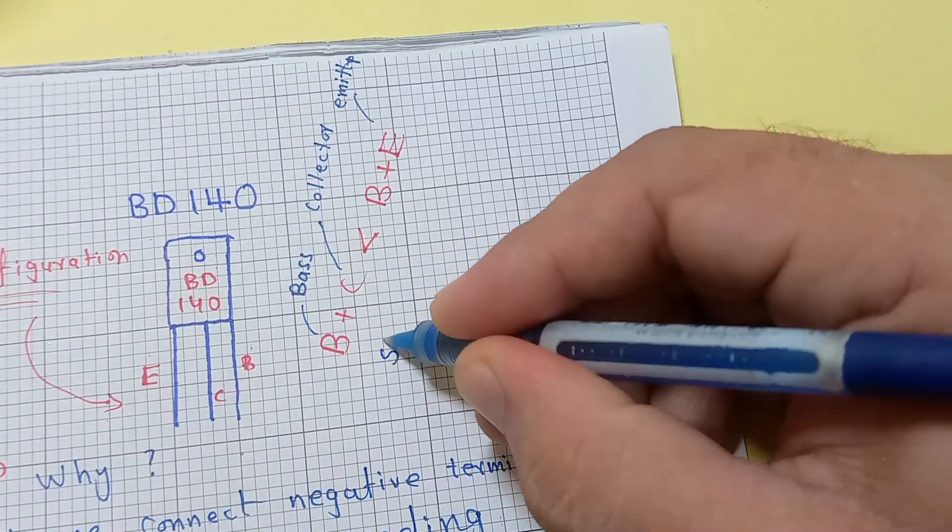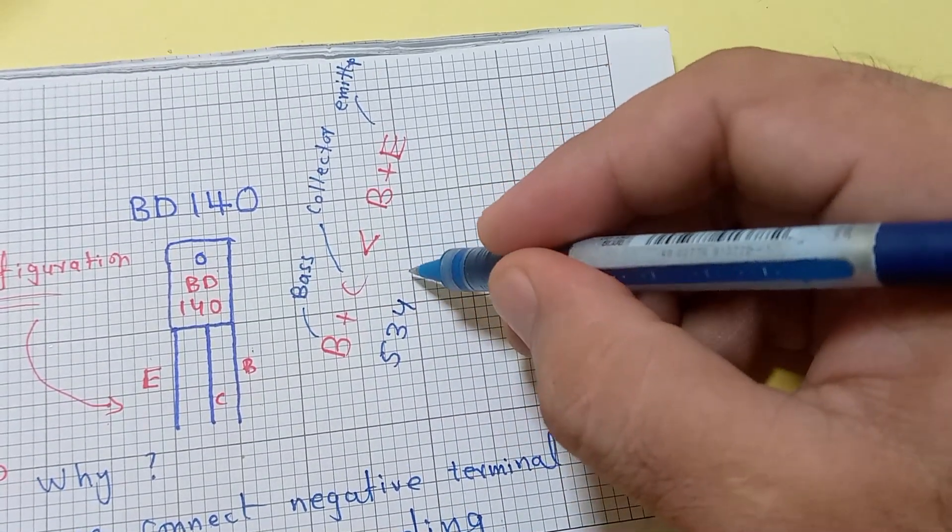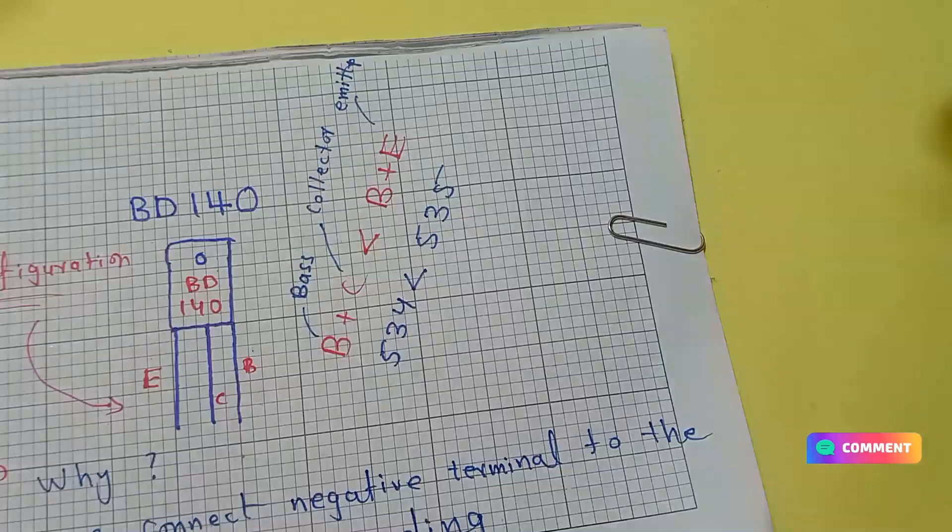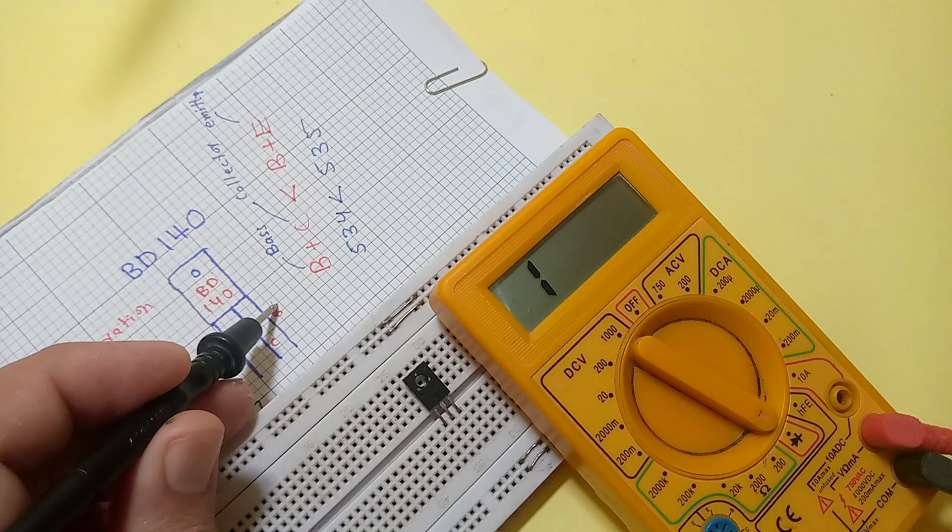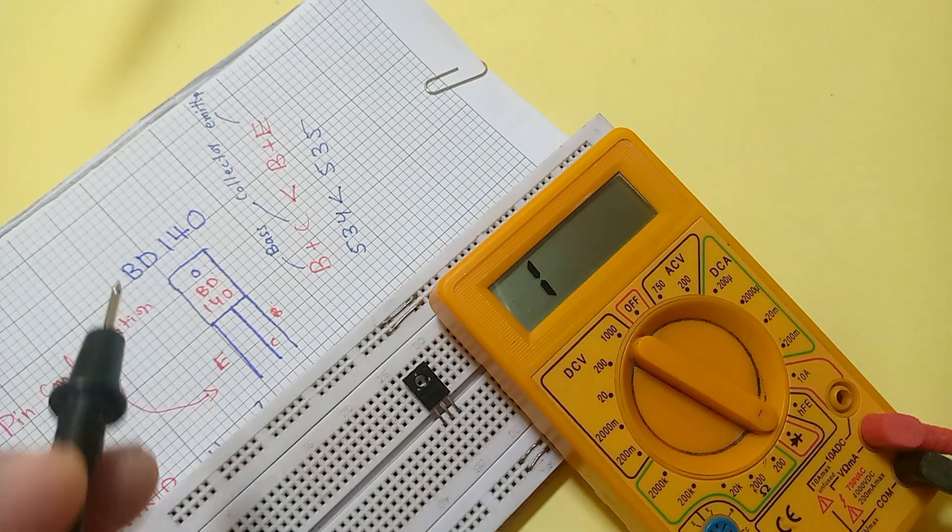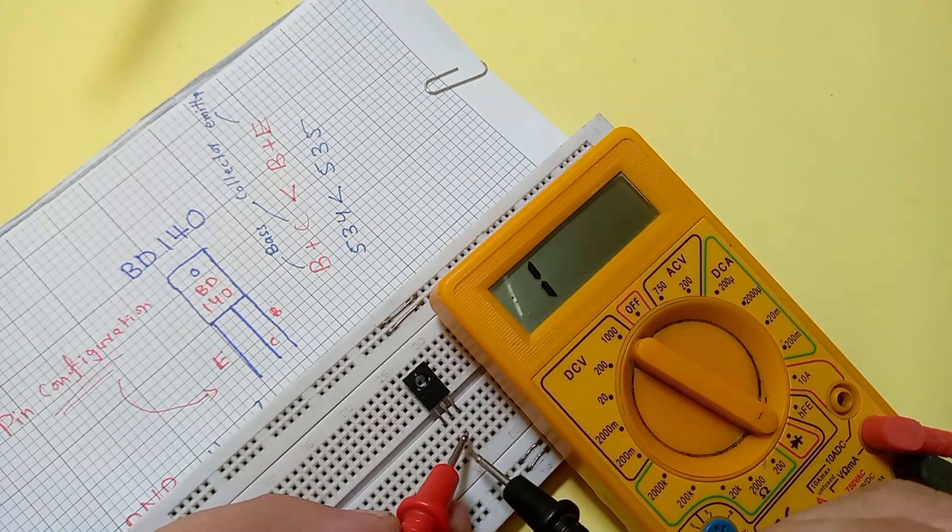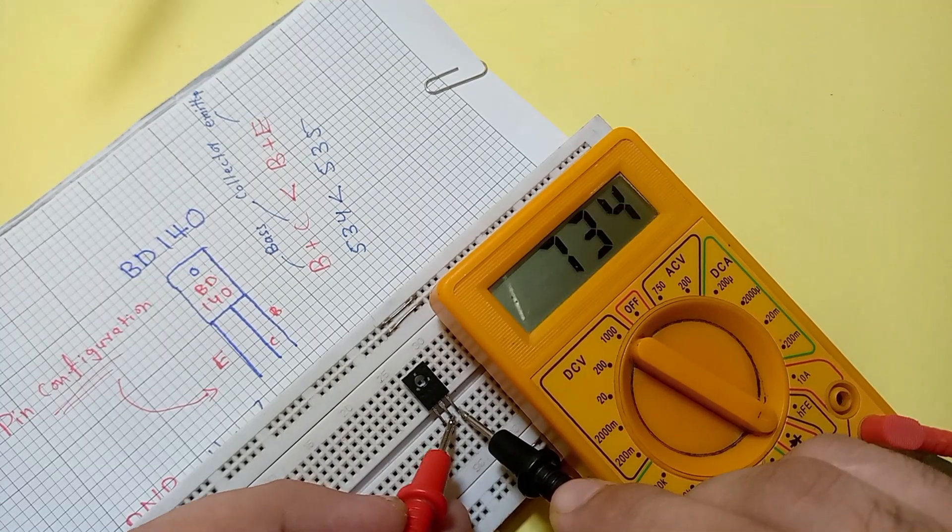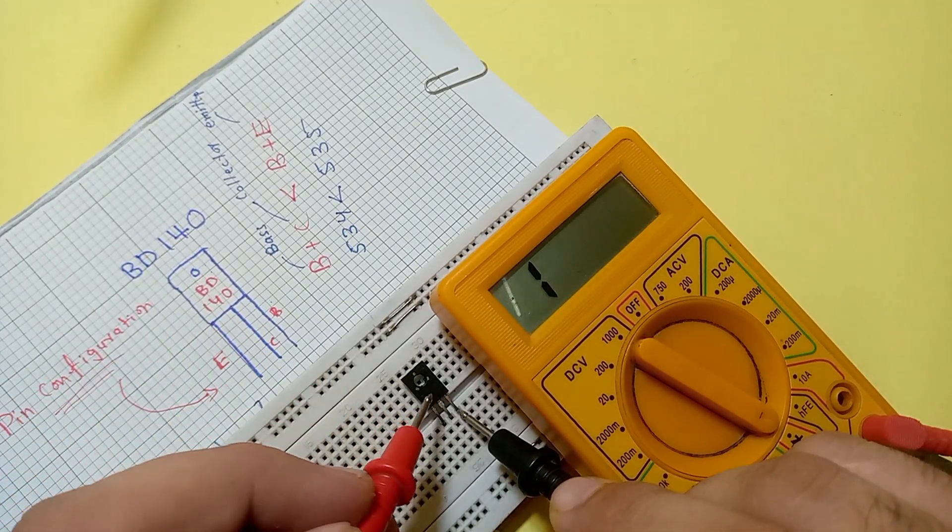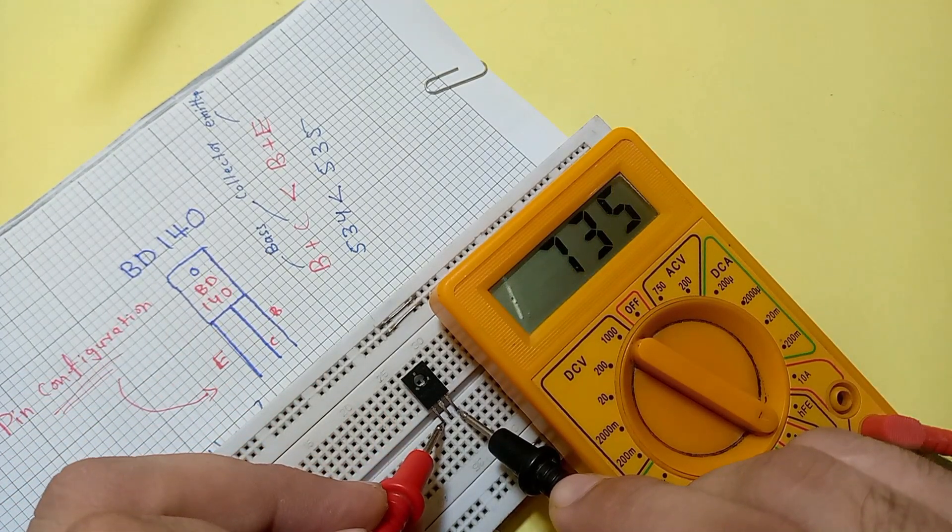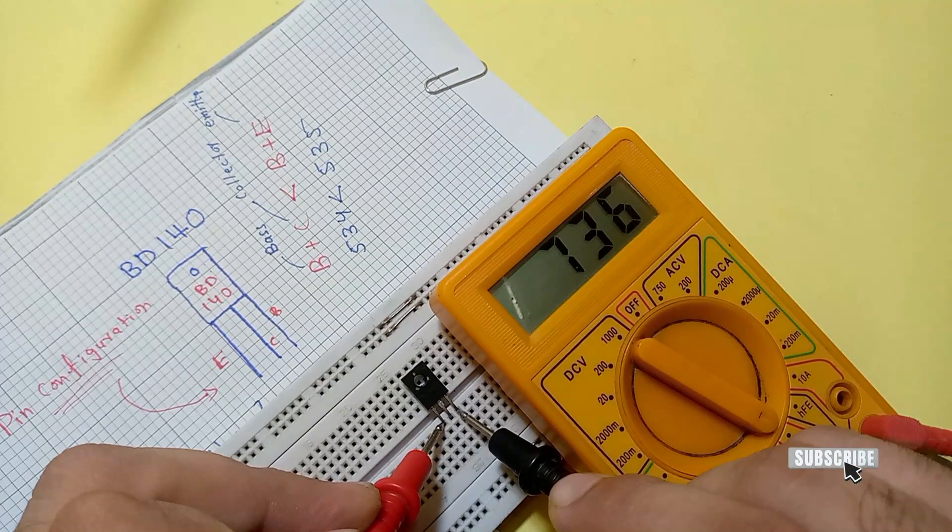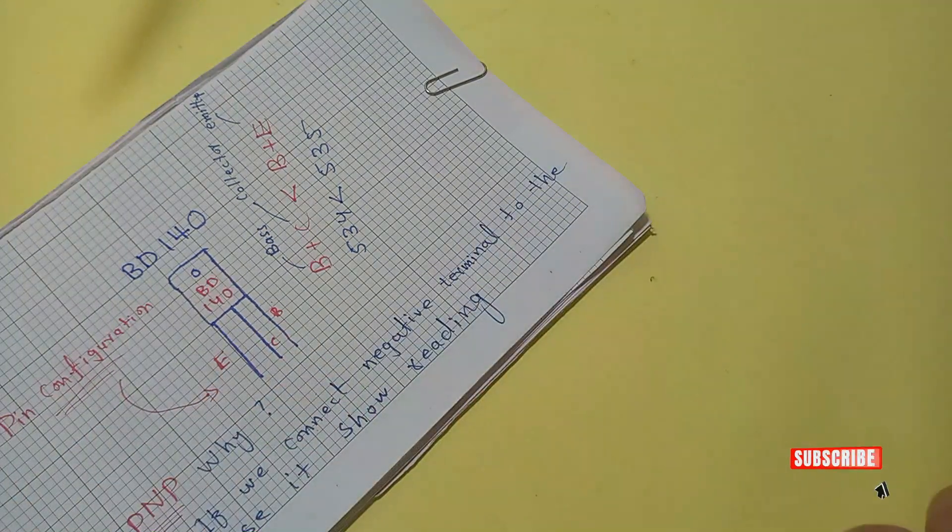Sorry for the mistake, I wrote 534 instead of 734. Look carefully. The base-collector reading is 734, while the base-emitter reading is 735. As you see in the video, the pin which shows greater reading with base is emitter.